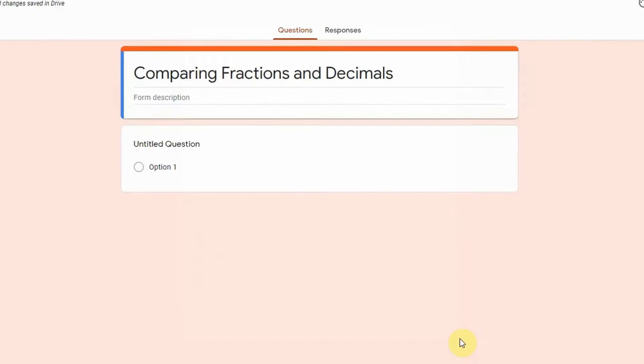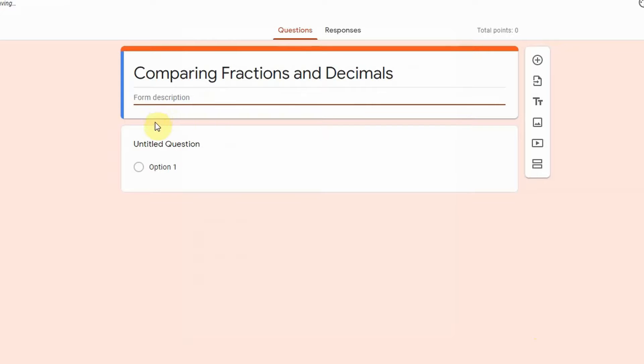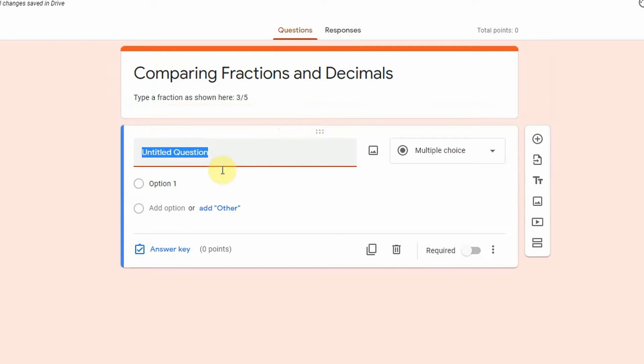Now if you have any special instructions for the task cards, sometimes I'll add in a note about this is how you type a fraction. So for example I can put type a fraction as shown here and I could put an example. So any specific instructions you have I always put those at the top.